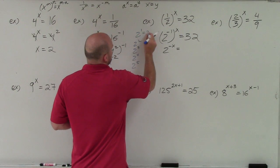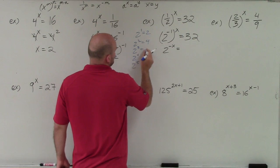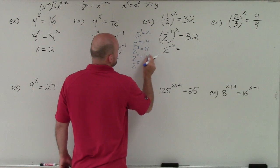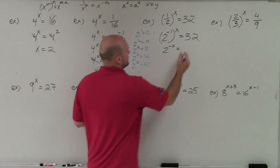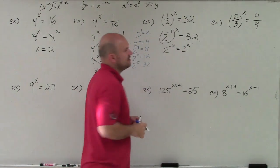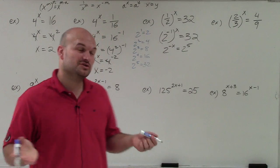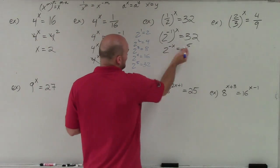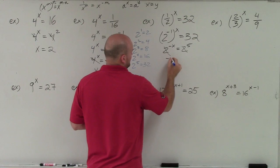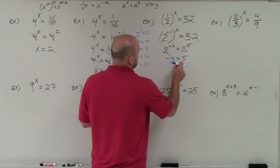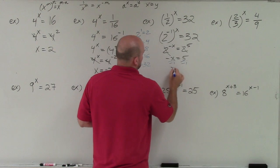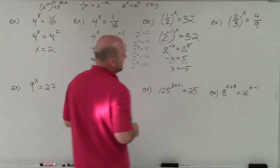2 to the first power is 2, 2 squared is 4, 2 cubed is 8, 2 to the fourth power is 16, 2 to the fifth power is 32. So therefore, I know 32 is equivalent to 2 to the fifth power. Now I have my one-to-one property. So I can say negative x is equal to 5. Just divide by negative 1 on both sides. x equals negative 5.